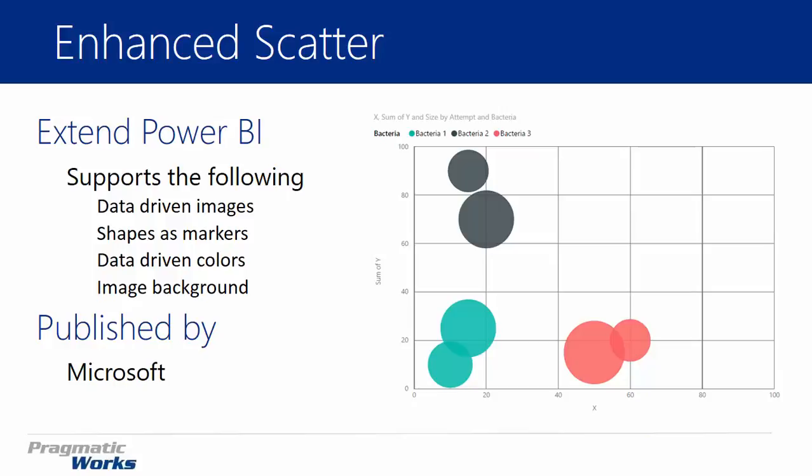In addition to those things, you can also make a background image — so on the background of the scatter chart, you can have an image. You can actually do that in the traditional scatter chart as well, but there are some fun things you can do with it in the Enhanced Scatter Chart that we'll take a look at.